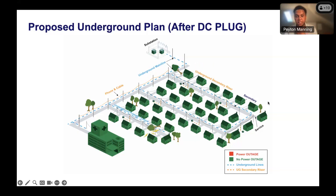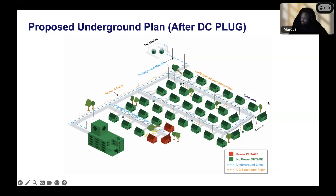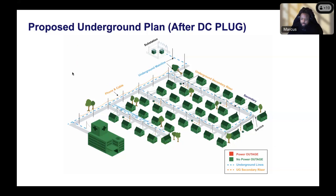Regarding whether Feeder 467 connects to the Connecticut Avenue underground feeder: Connecticut Avenue already has Feeders 467 and 476, both of which are already underground. The new underground feeder will connect to that existing infrastructure through a four-way switch.